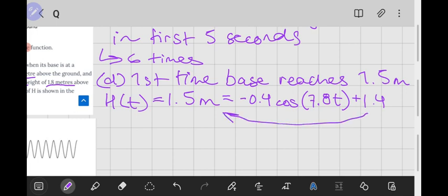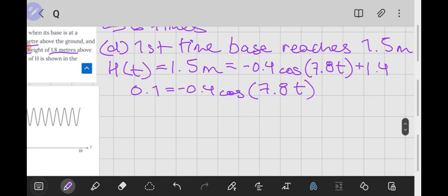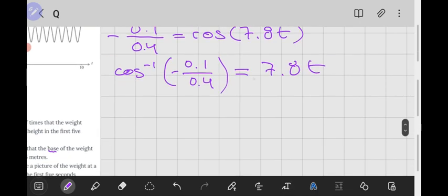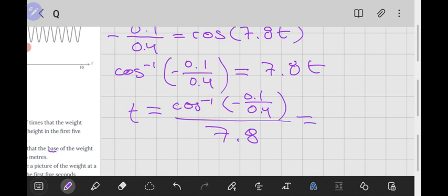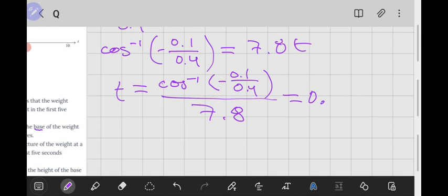Subtract 1.4 from both sides. So we'd get 0.1 is equal to negative 0.4 cos(7.8t). And we'd divide both sides by negative 0.4. And then we'd take the inverse cos, and then we'd divide both sides by 7.8.